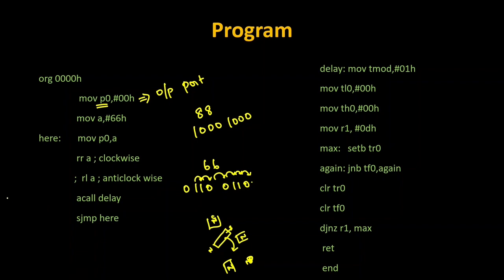In the previous program I used RRC (Rotate Right through Carry). Here I am using RR — Rotate Right without Carry. You can use either; both produce the same kind of rotation output. The only difference is that with RRC an extra carry bit is added, whereas with RR it is not. Rotating right causes clockwise rotation; rotating left causes anti-clockwise rotation. The operation works on your accumulator data.